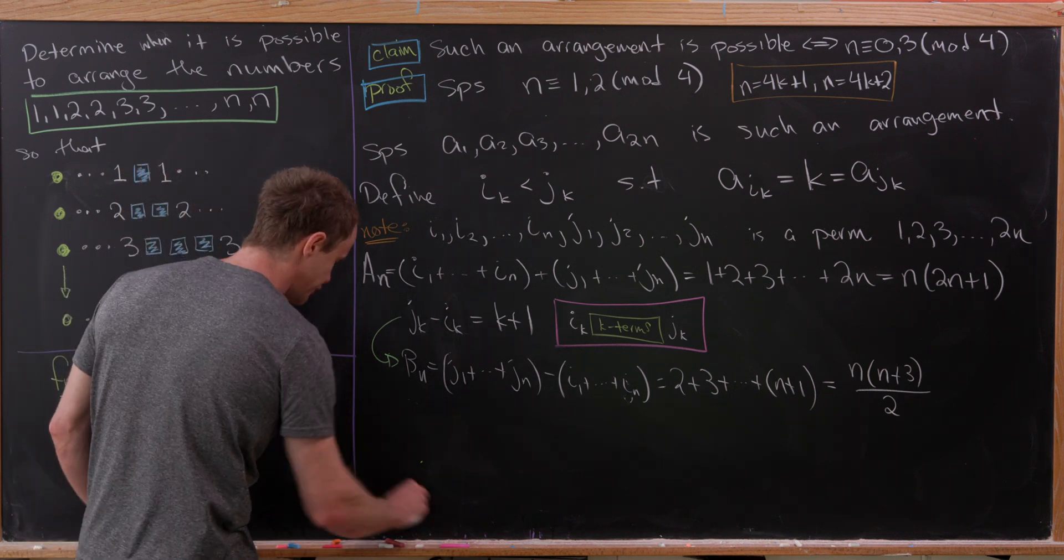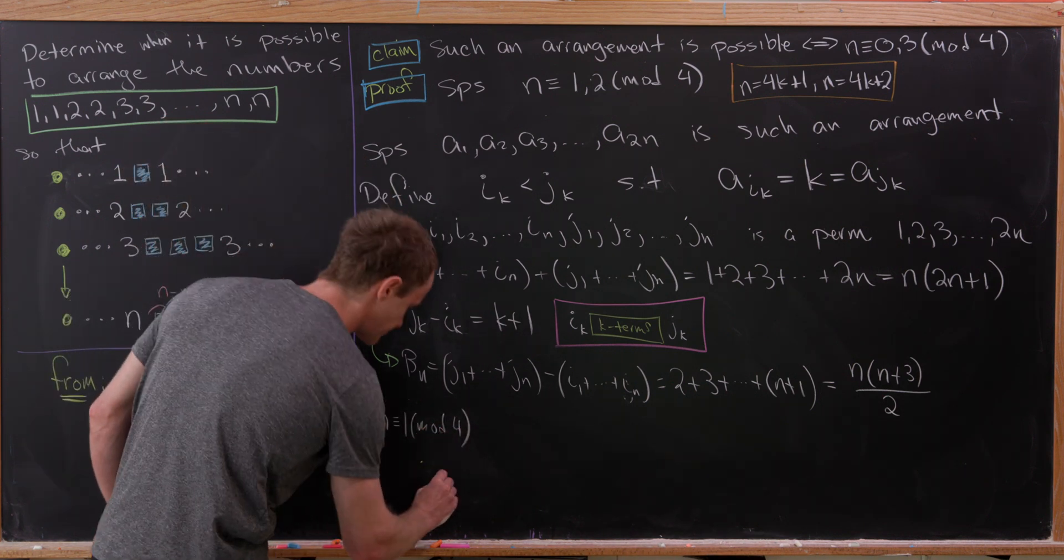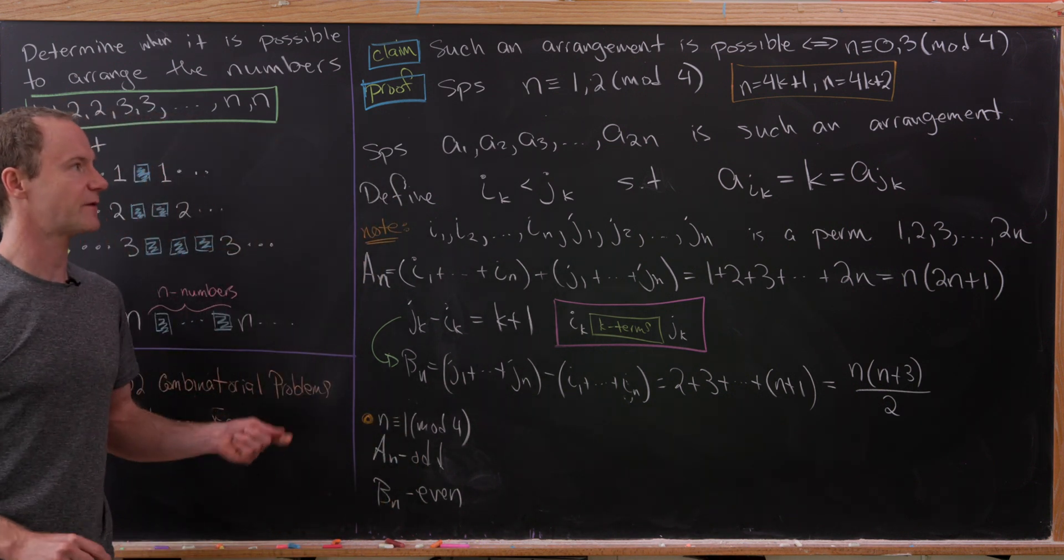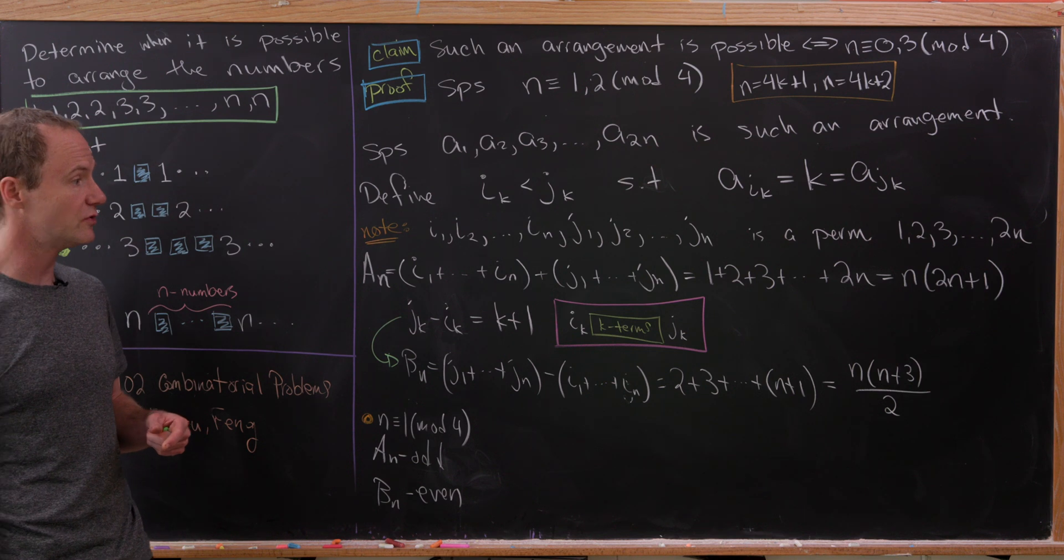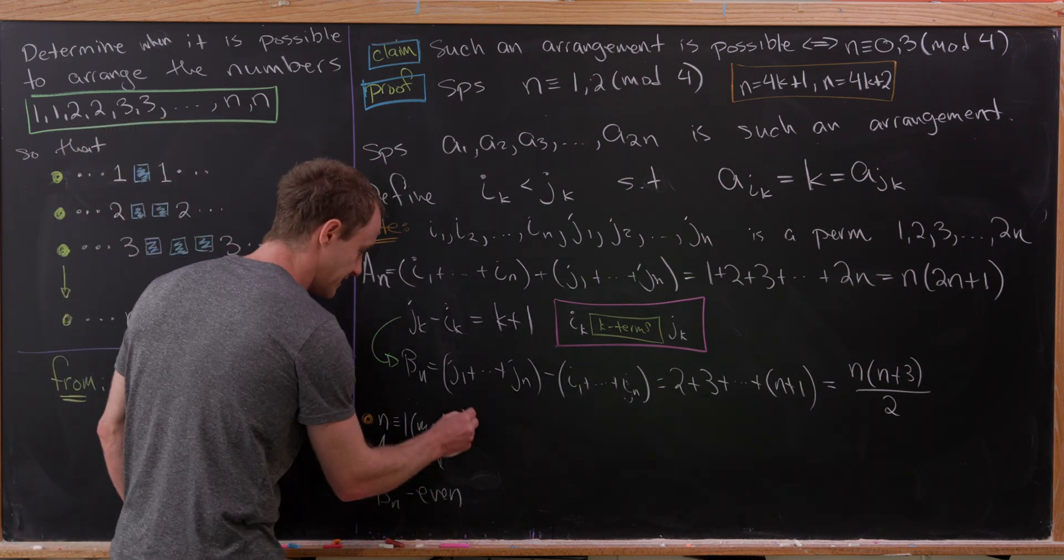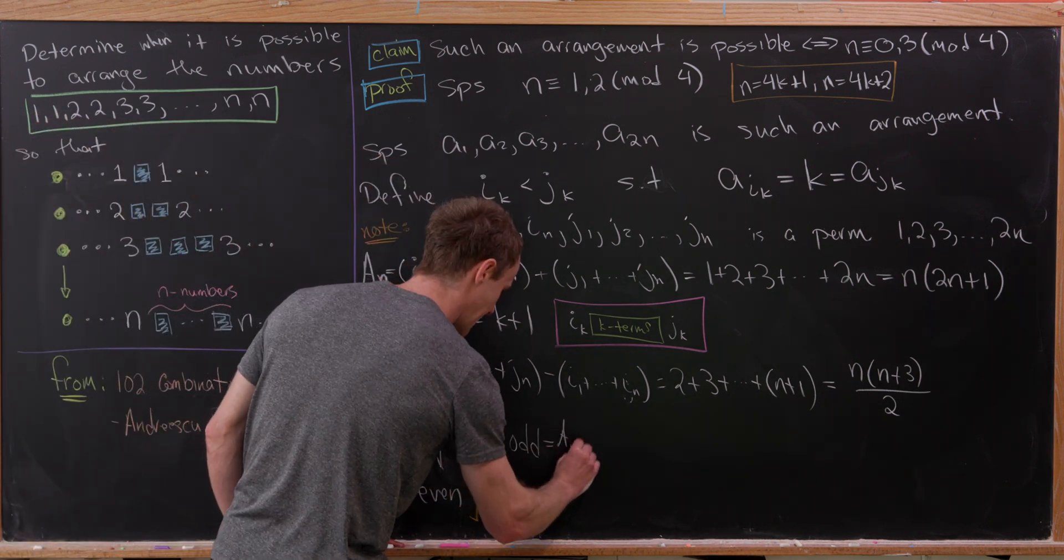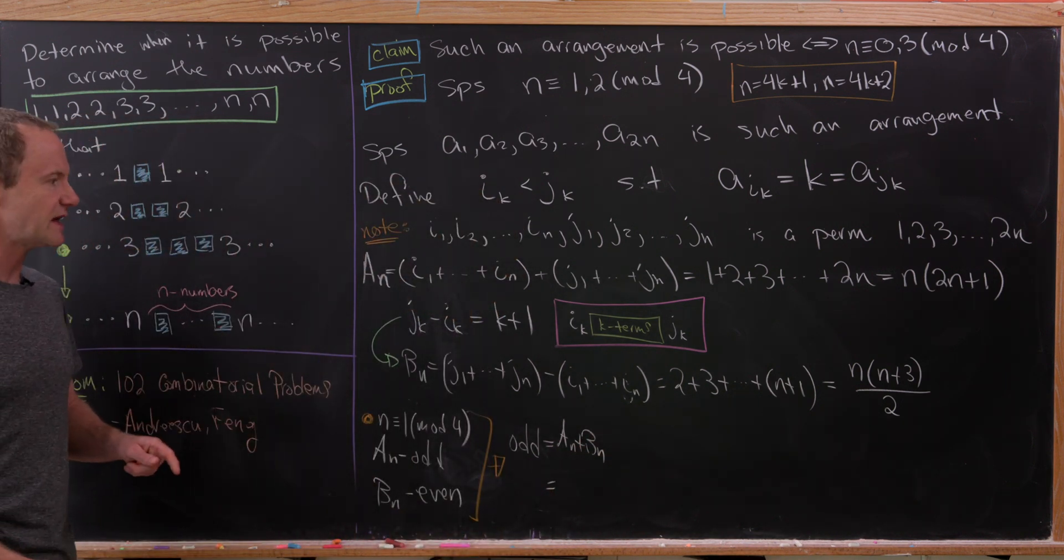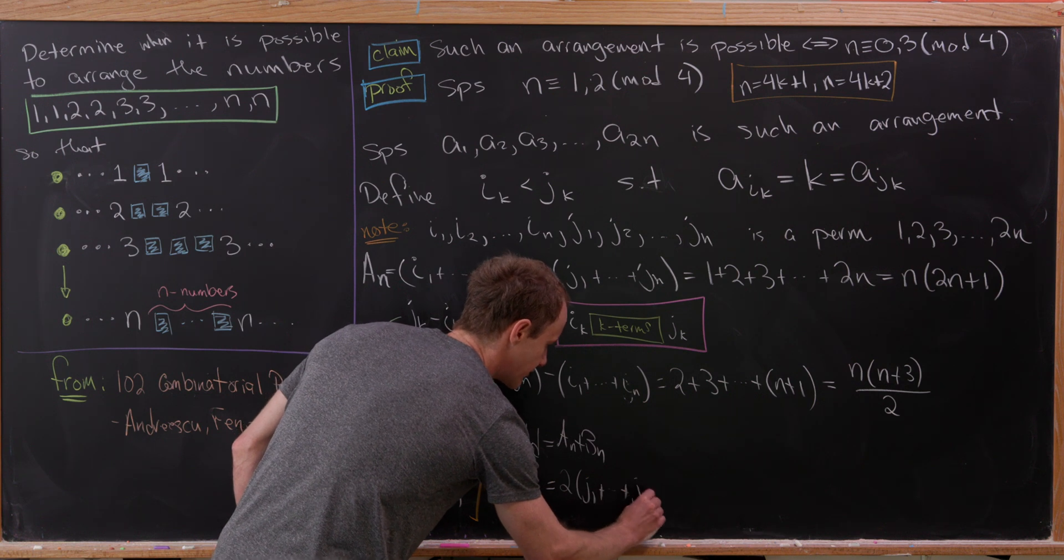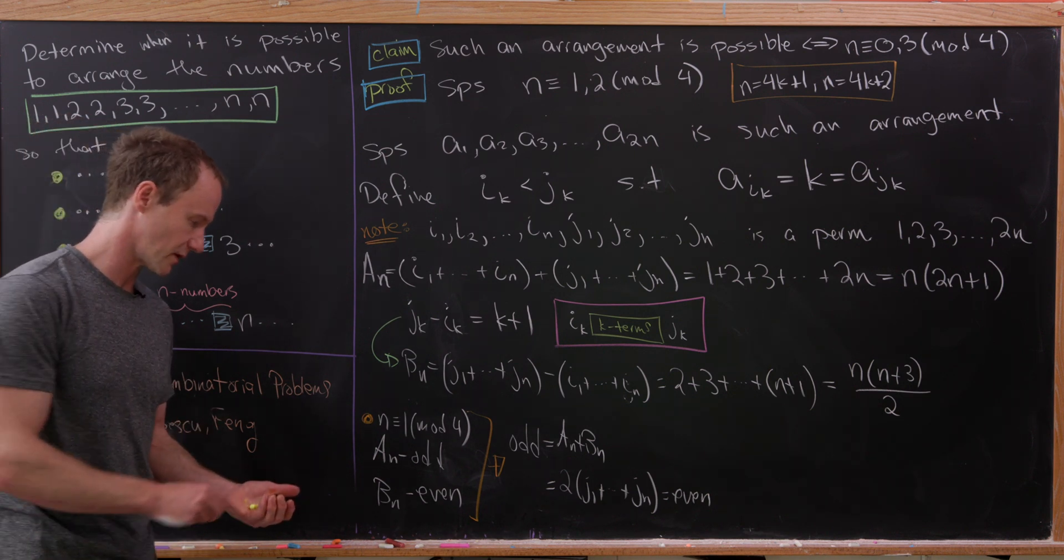Now we're going to break this down into our two cases. If N is congruent to 1 mod 4, we have A sub N is in fact odd, and B sub N is in fact even. That's because N is of the form 4k plus 1. If you stick 4k plus 1 into each of these formulas, you'll see that you get an odd number and then an even number respectively. But then from there, we see that if we take their sum, we get an odd number. So we have odd is A_N plus B_N. But now observe that A_N plus B_N, that cancels the sum of the I1 through IN terms and gives us twice the sum of the J1 through JN terms, which is most definitely even because it's two times some number. That's exactly the definition of an even number.